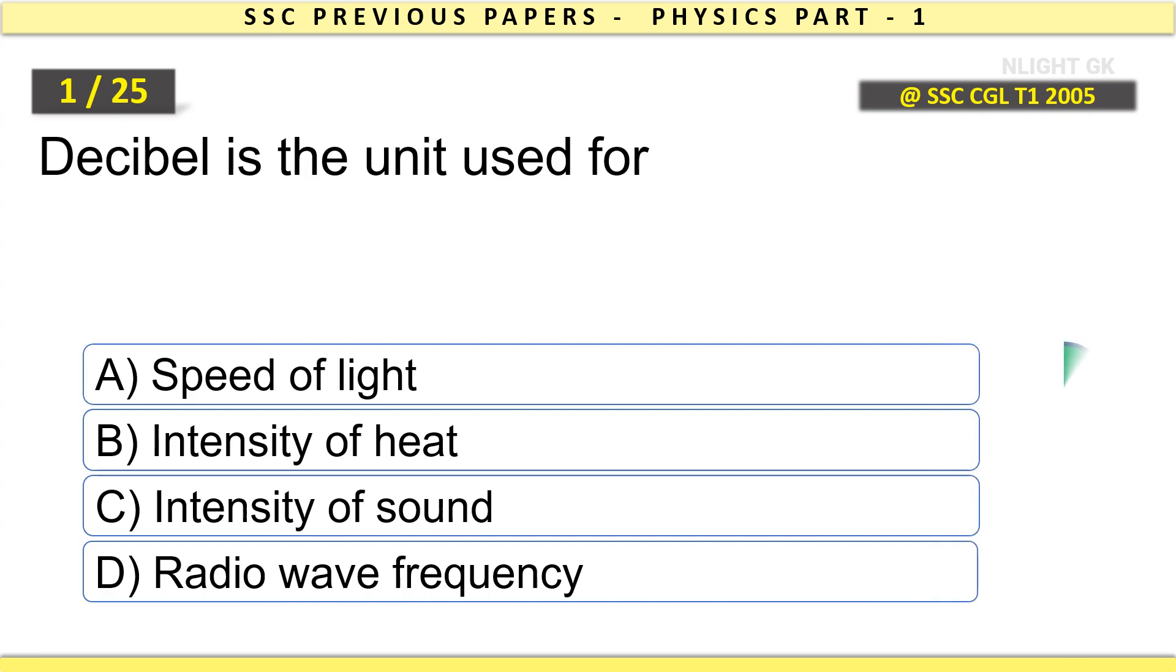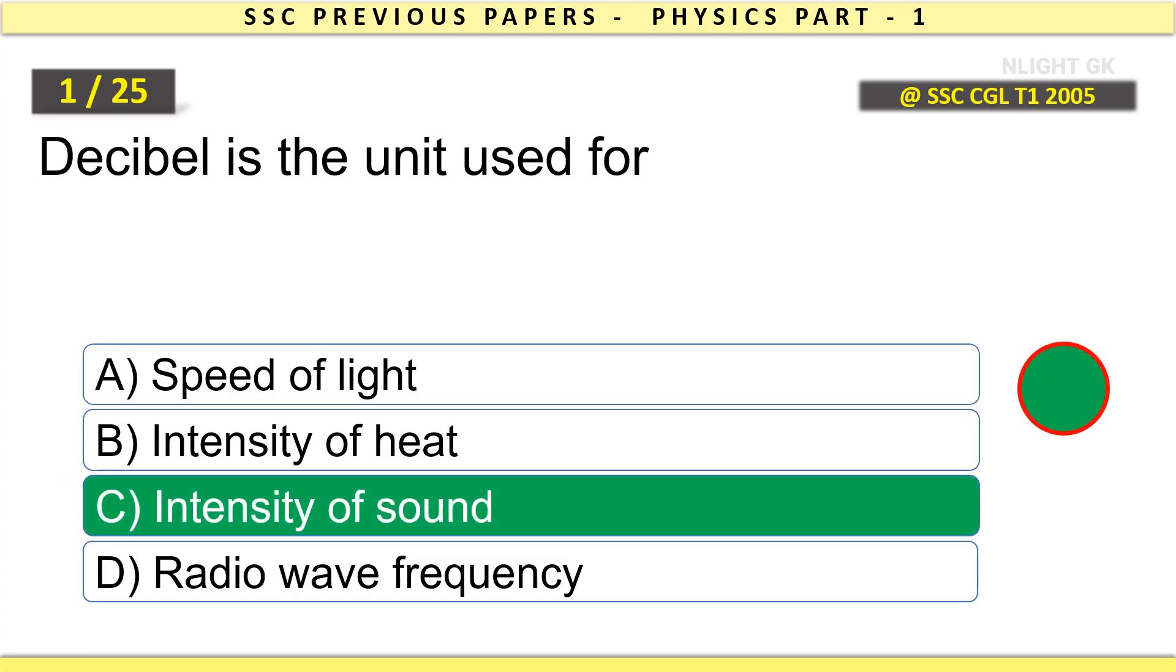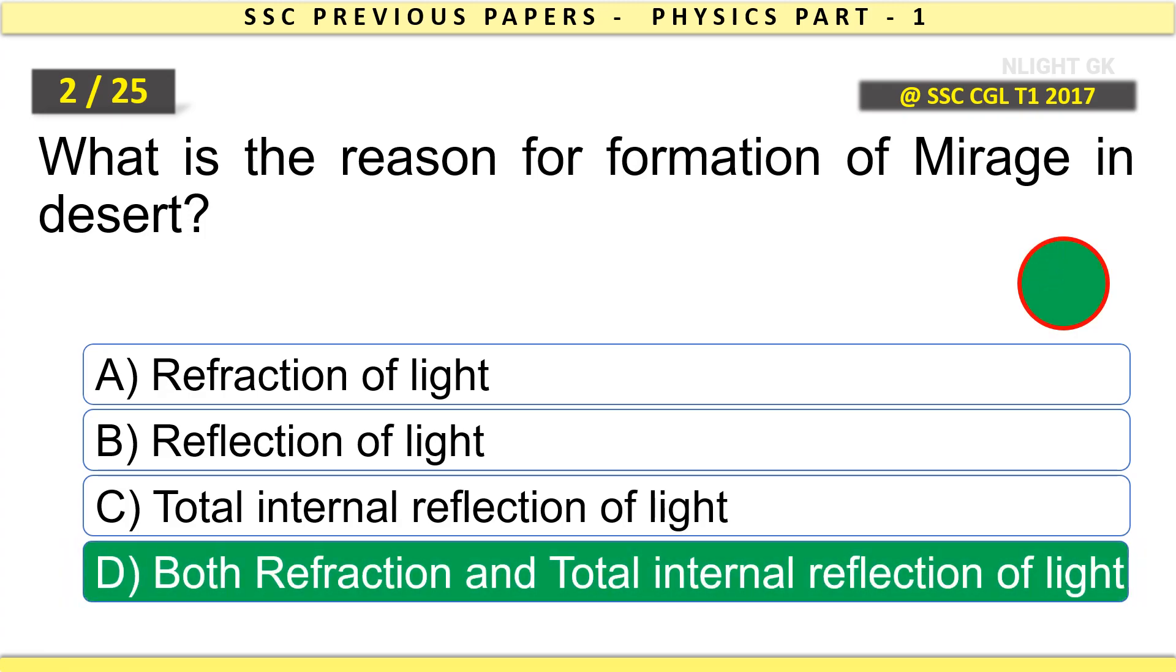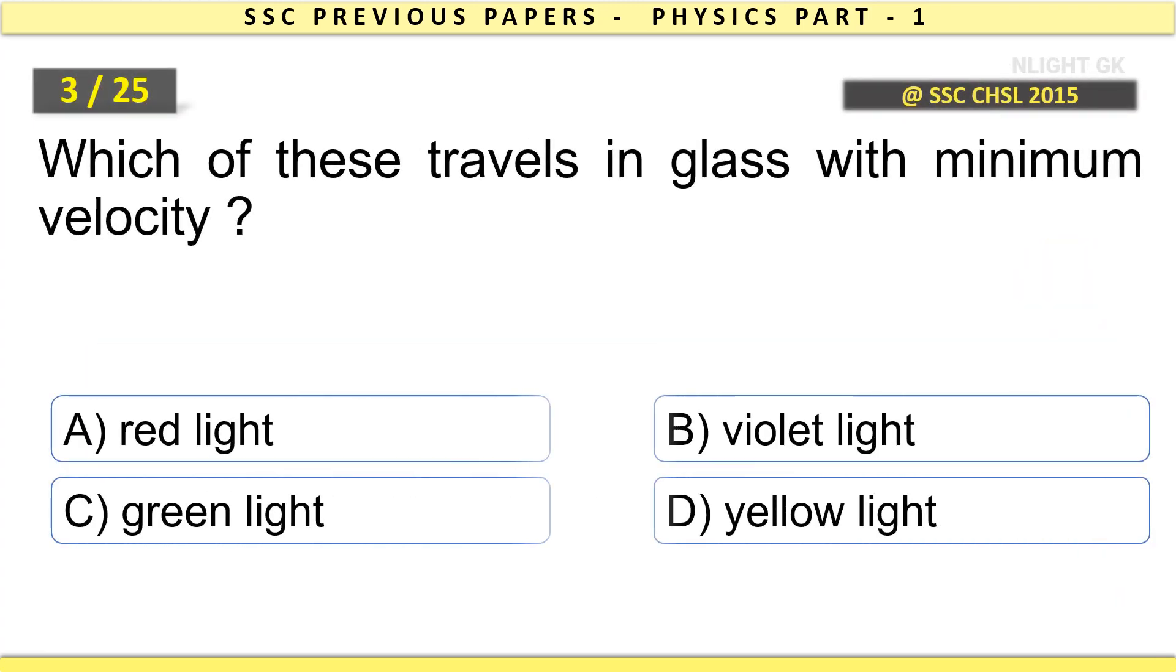Decibel is the unit used for intensity of sound. What is the reason for formation of mirage in desert? Both refraction and total internal reflection of light. Which of these travels in glass with minimum velocity? Violet light. When the barometer reading dips suddenly, it is an indication of storm.